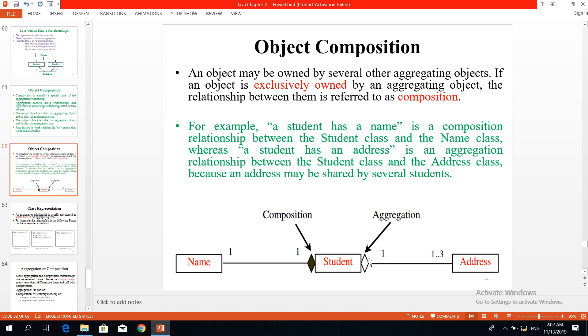Composition and aggregation can be represented in the diagram. If we have a strong relationship, it's composition. If we have a weak relationship, it's aggregation. So I'll tell you about this in the video.